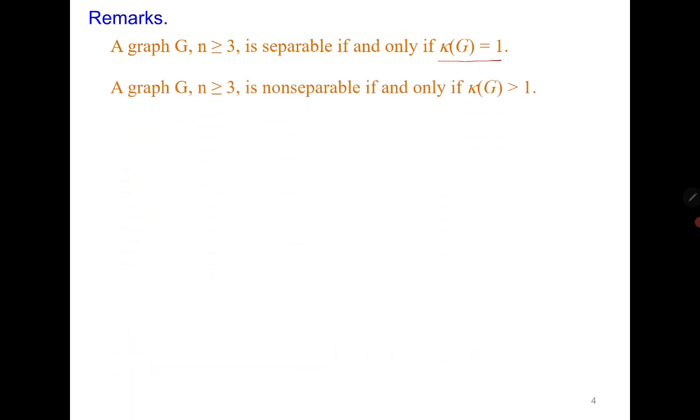Let us see some interesting remarks. A graph is separable if and only if vertex connectivity κ(G) = 1. Recall the concept of vertex connectivity—the largest k for which the graph is k-connected. If the graph is 2-connected, it means it does not have a cut vertex. If it is greater than 1, the graph is non-separable. Two-connected and three-connected graphs do not have a cut vertex.